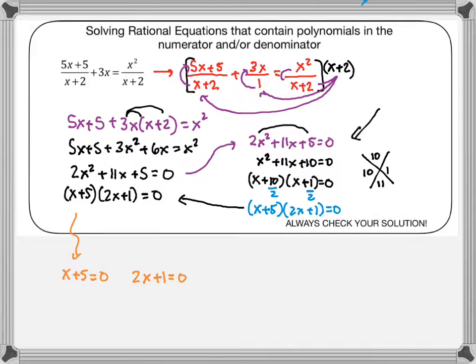Okay, anyhow. Subtracting 5 and doing this problem out over here. We're going to get X equals negative 5, and X equals negative 1 half.